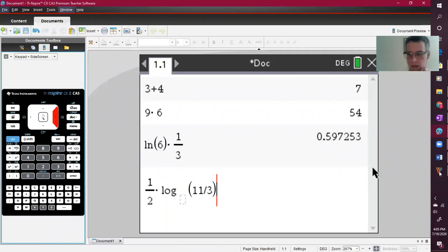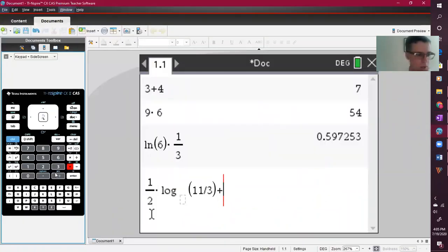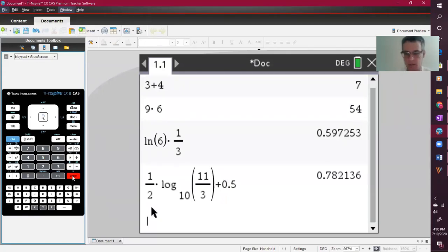And then I believe we have a - whoops, I don't need that extra parentheses. I'll just come outside and then I can't remember if it was plus one half or minus one half. It looks like it's plus. So we'll come back and do plus one half. I think I'll just do 0.5. A little easier to write. And now we hit enter. Looks like we're getting 0.782.